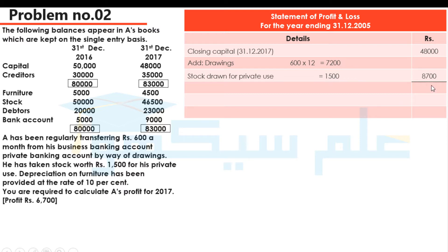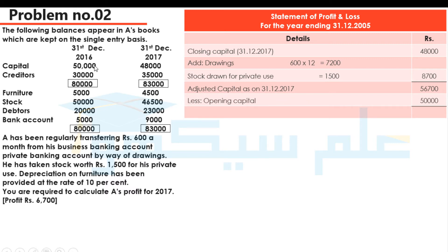There is Rs. 7,200 drawings for cash and Rs. 1,500 for stock. If we sum up these two, we will have Rs. 8,700. Now we will add these two — we will have adjusted capital as on 31 December 2017: Rs. 56,700. And the opening capital is Rs. 50,000.